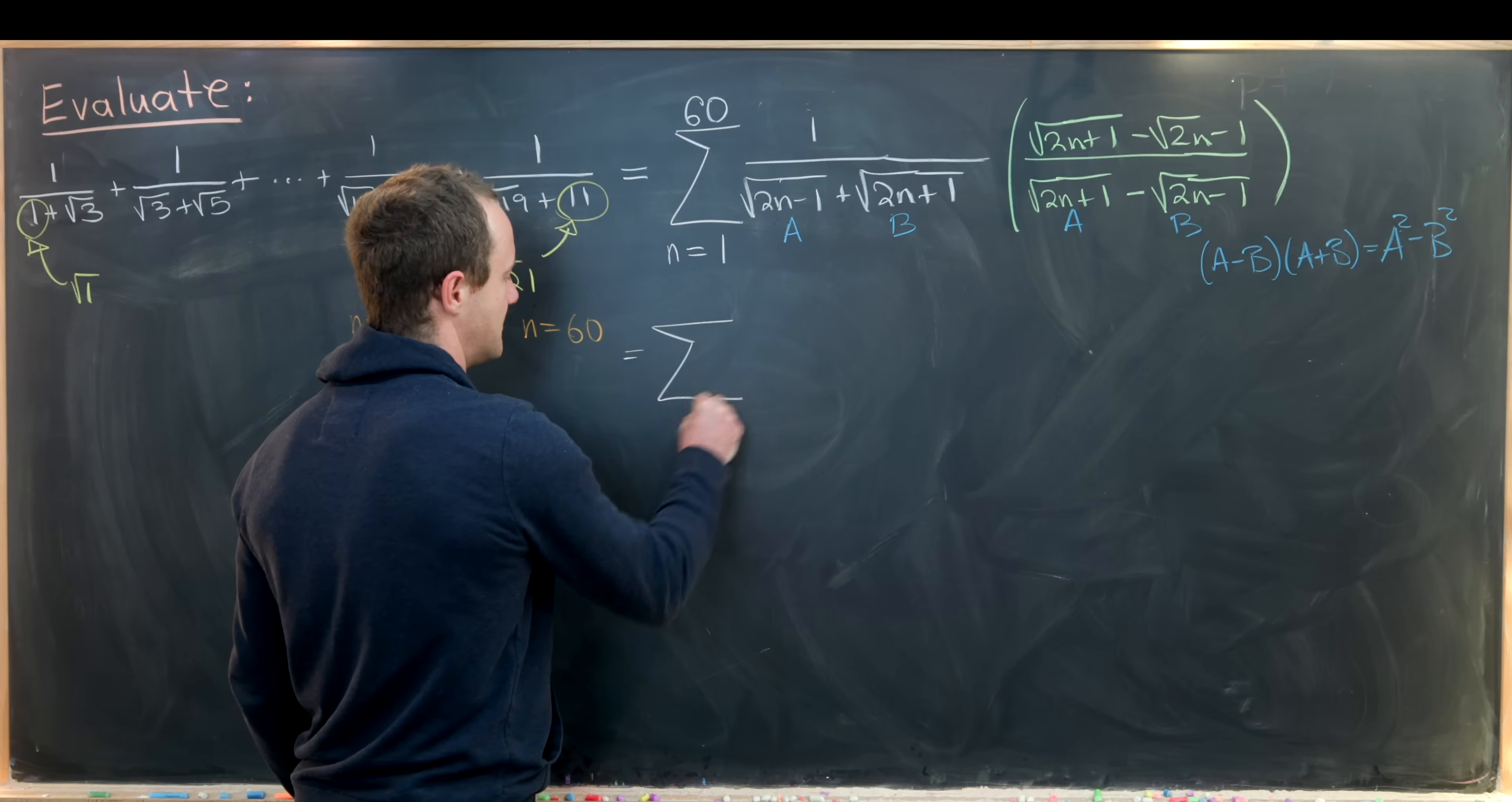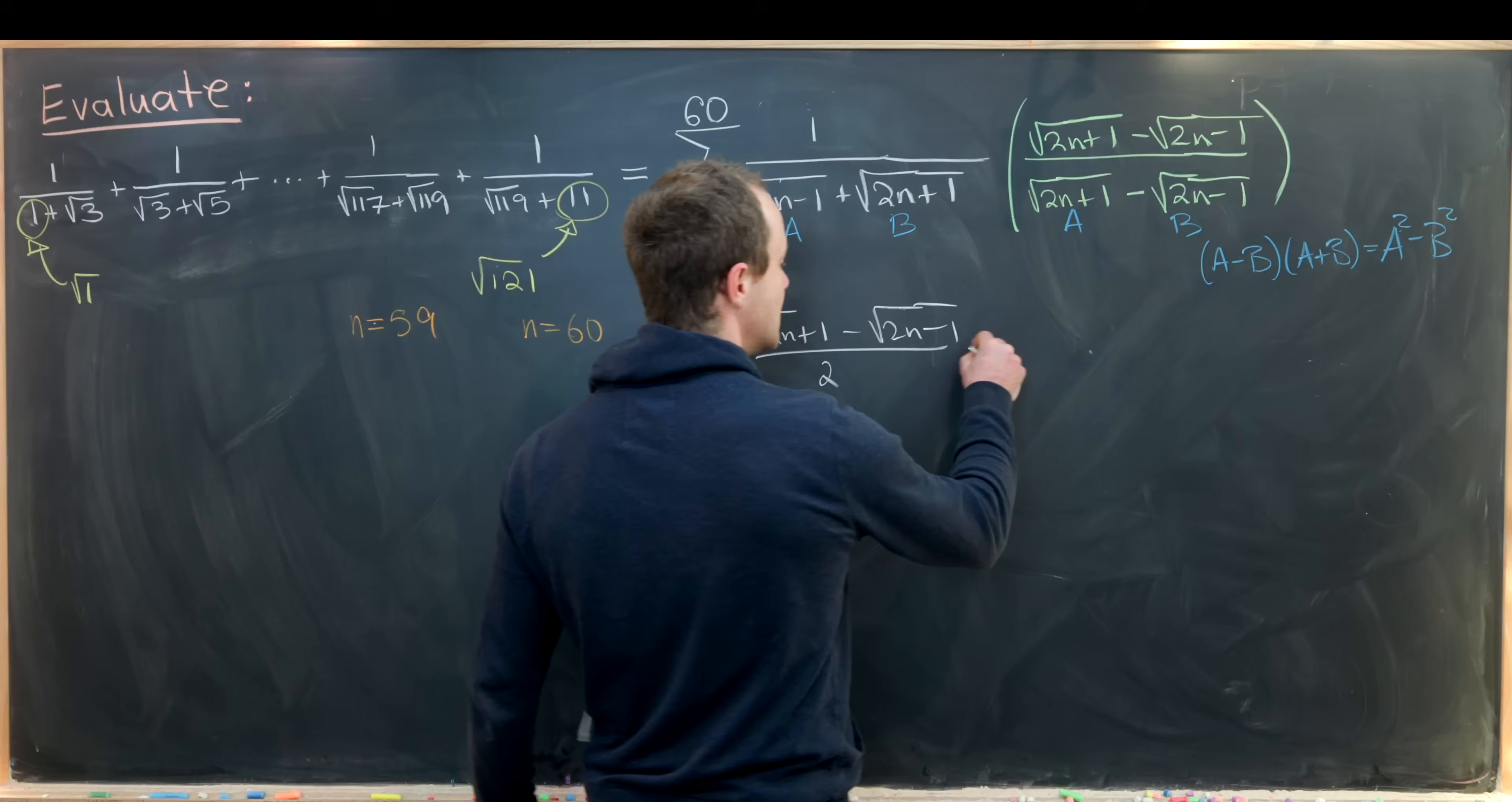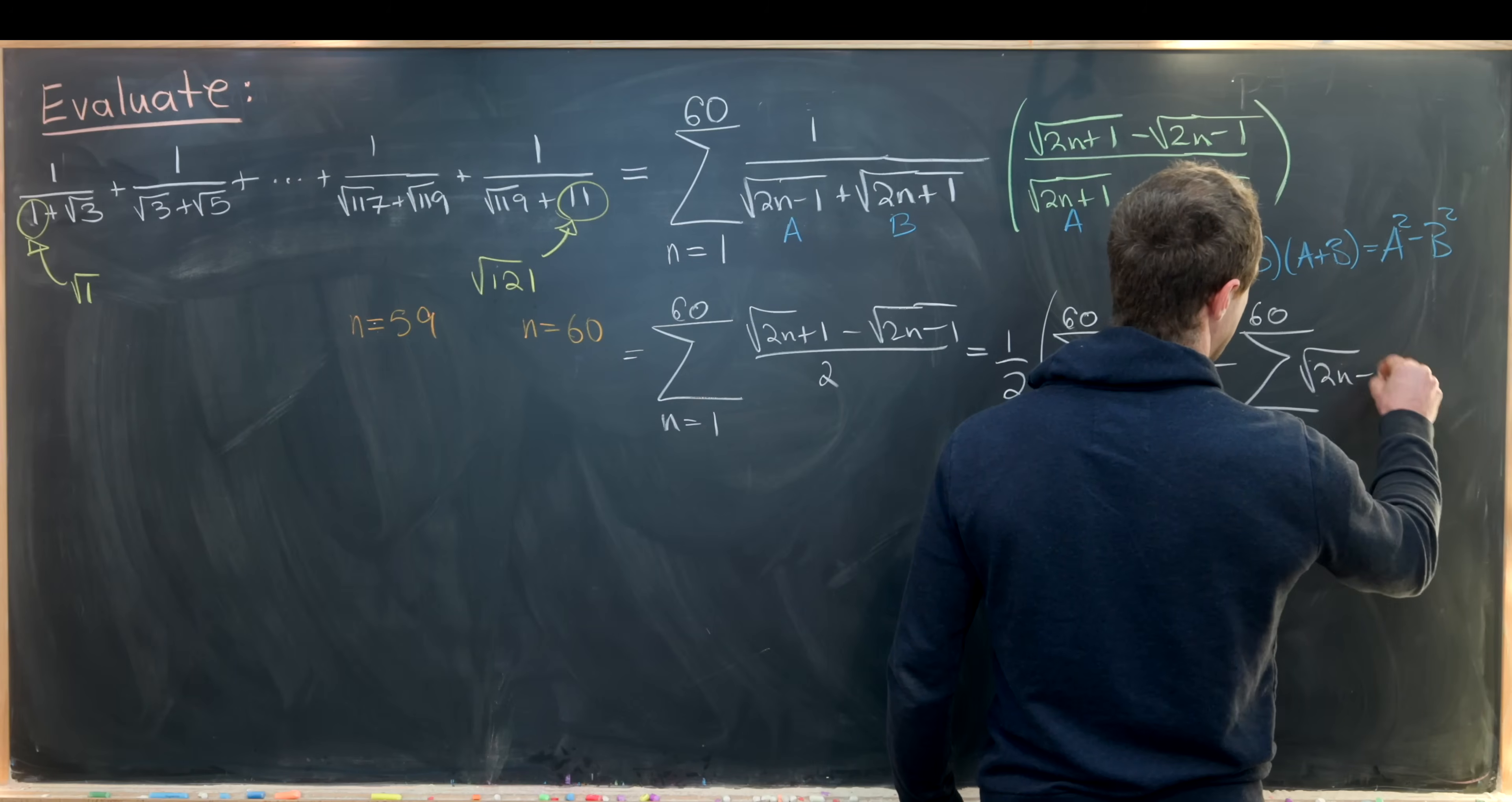Since we've got a finite sum, I can break this apart into two sums without too much worry. I'll factor out 1/2. That gives me 1/2 times the sum from n = 1 to 60 of √(2n+1) minus the sum from n = 1 to 60 of √(2n-1).